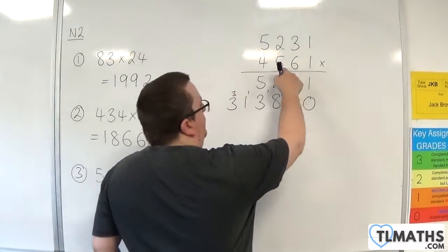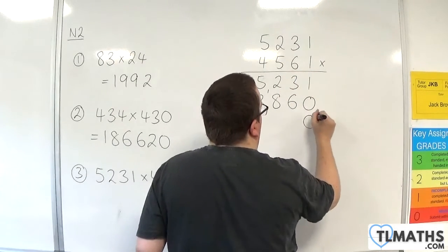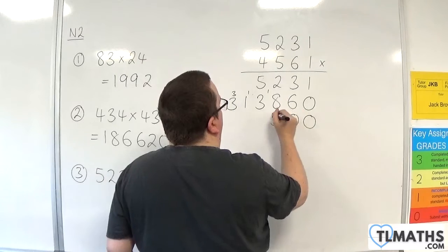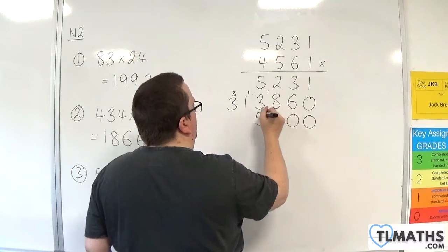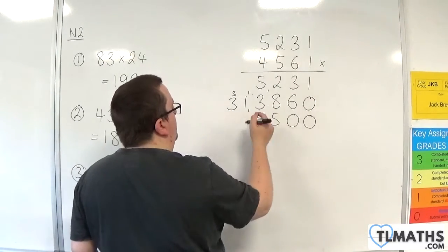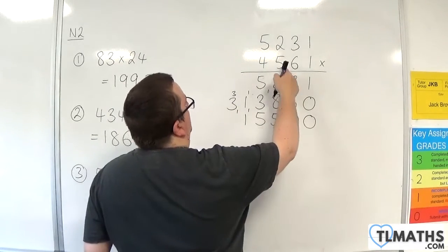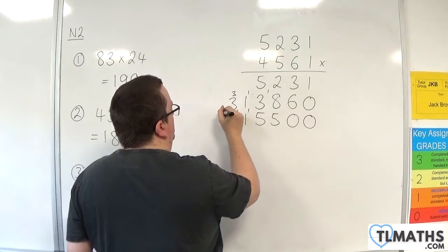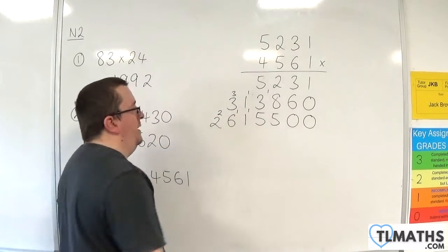Now we need to multiply through by 500, so we need to add in two 0s. 5 times 1 is 5. 5 times 3 is 15, put in the 5, carry the 1. 5 times 2 is 10, add on the 1 is 11, so put down the 1, carry the 1. 5 times 5 is 25, add on the 1 is 26, so put in the 6, carry the 2, and the 2 just drops down.